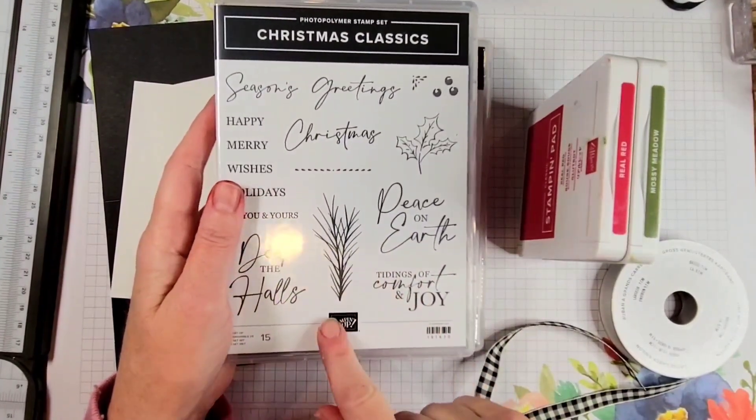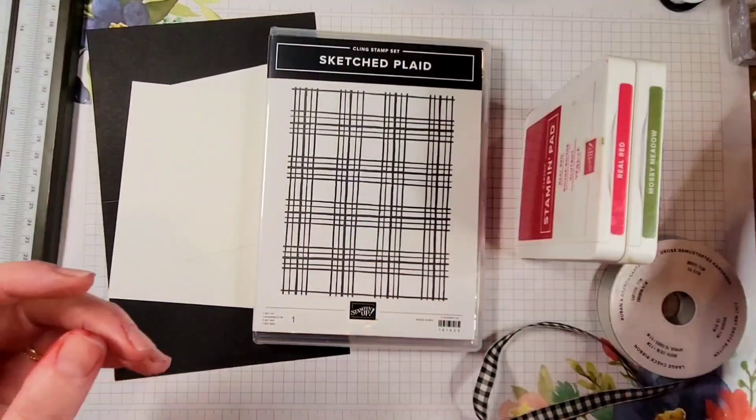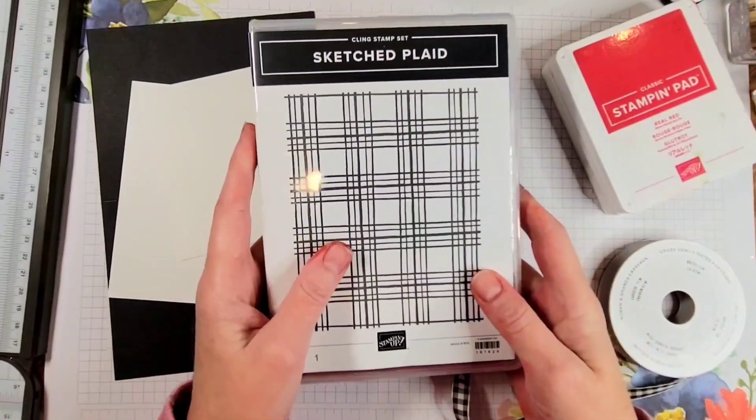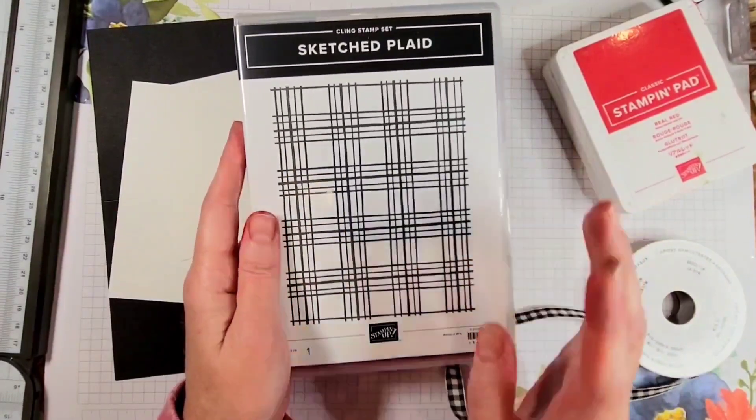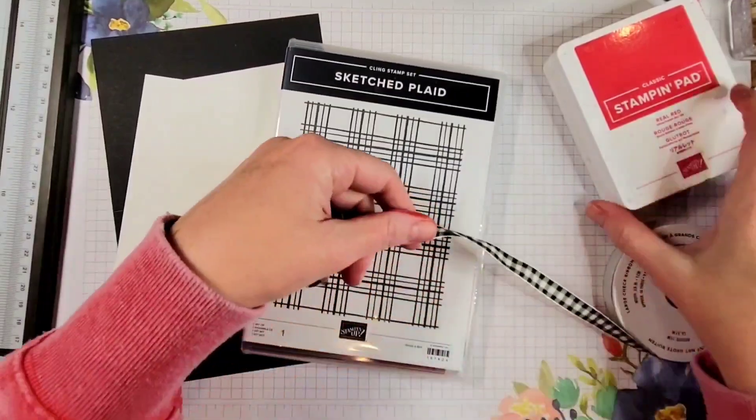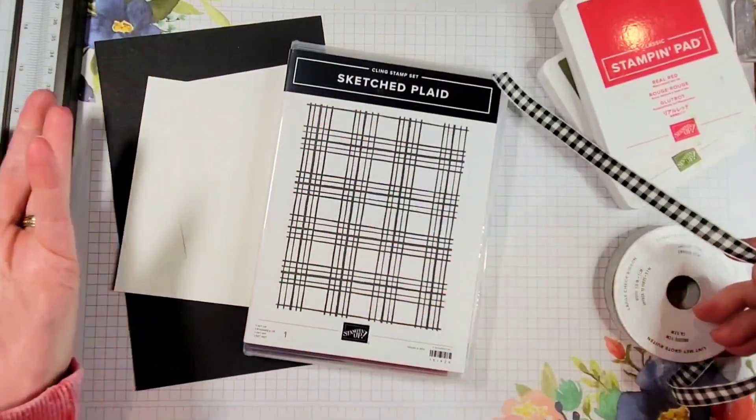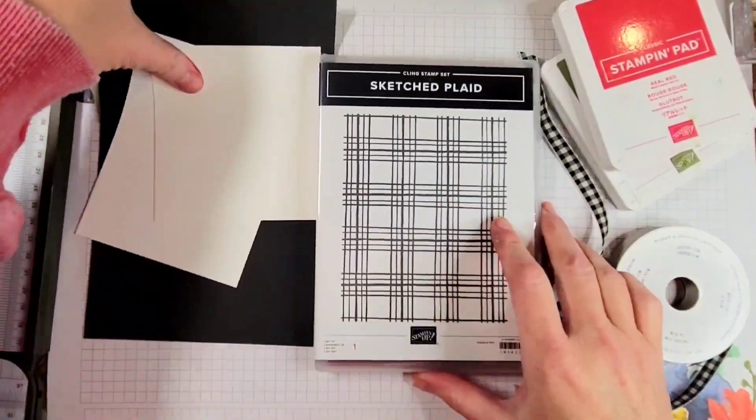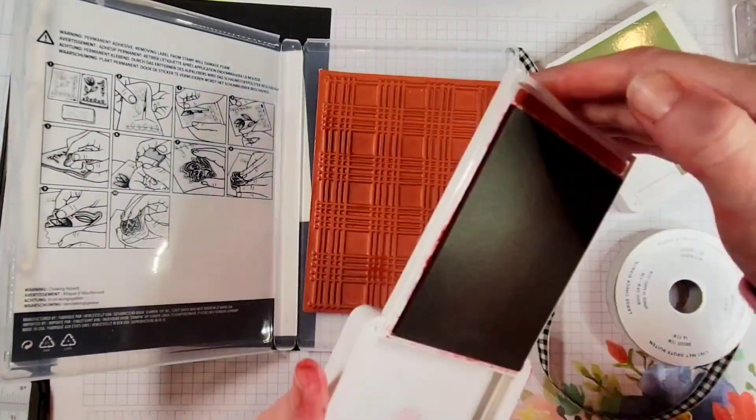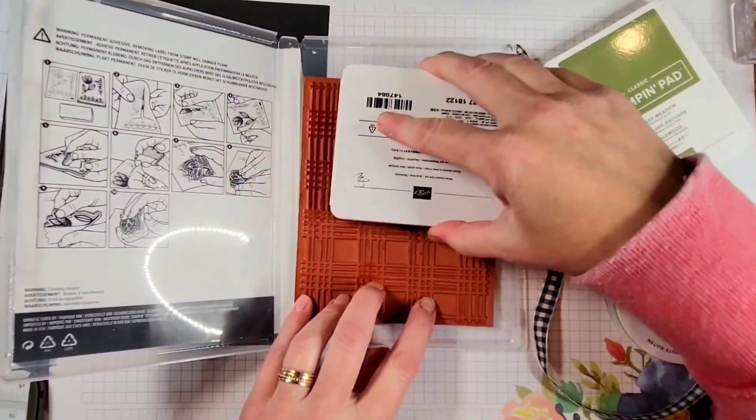I am only going to be using the Christmas Classics stamp set, not even the dies. That's primarily because I don't have the dies. So it really pushed me to come up with a weird technique that I'm about to show you. I'm also using the sketched plaid and all these materials, real red and mossy meadow, black and vanilla ribbon, and then just a little bit of cardstock. So I'm just going to jump right in and use the plaid background stamp with real red.